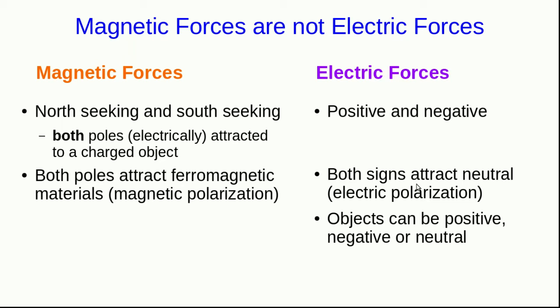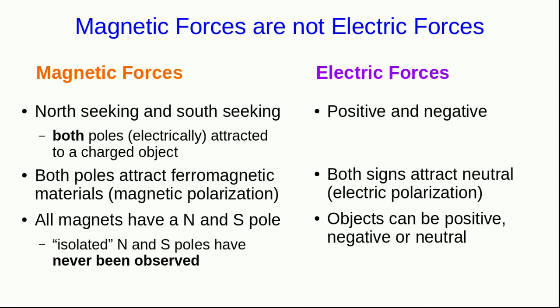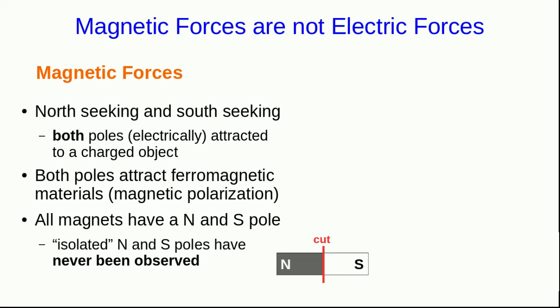Another big difference between electric forces and magnetic forces is a difference again between charges and poles. Electrically charged objects can be positive or negative or neutral. However, all magnets have both a north-seeking pole and a south-seeking pole. Isolated north poles and south poles have never been observed. In fact, if you take a magnet and you cut it in half, you might think that this would give you an isolated north pole and an isolated south pole, but it doesn't. You get two smaller magnets, each of which has its own north-seeking and south-seeking pole.